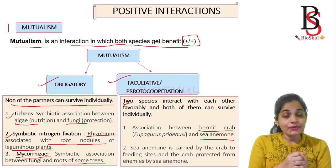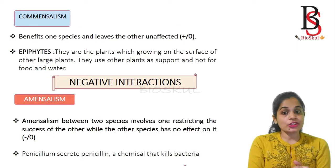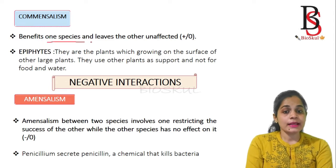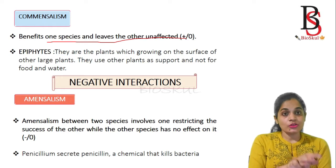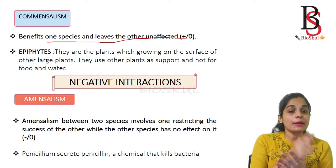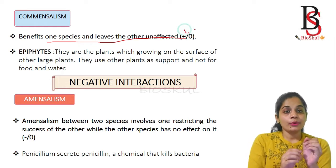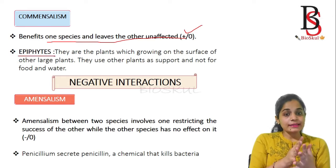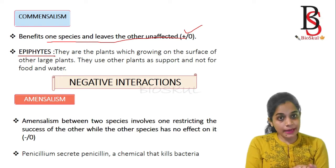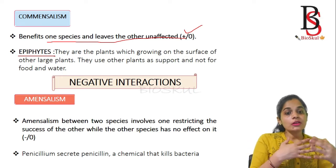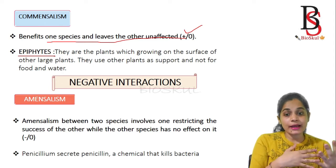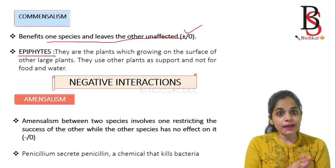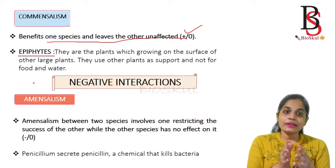The second type of positive interaction is commensalism. In commensalism, one species gets benefit without affecting the other species. It is represented by plus-zero. An example is epiphytes — plants that grow on the surface of other large plants. They use the larger plant for support but do not depend on it for food or water. Epiphytes get benefits without harming the larger plants.